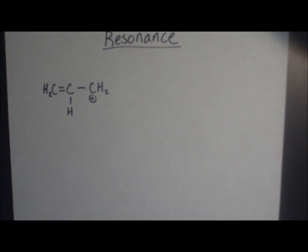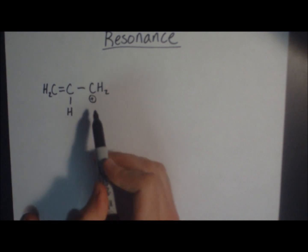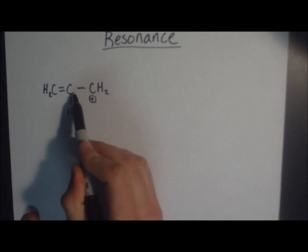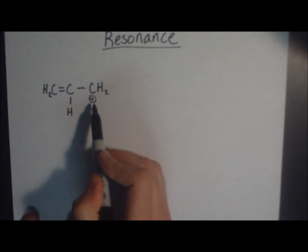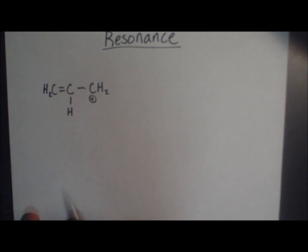Take a look at the cation I have drawn right here. This is not the full picture because in this Lewis structure we could also have the double bond connecting this carbon and this carbon with the positive charge over here.